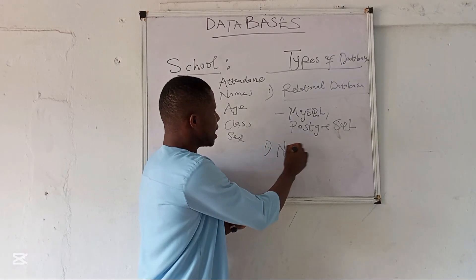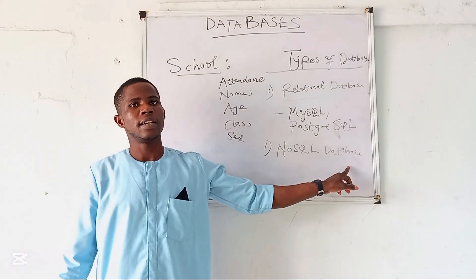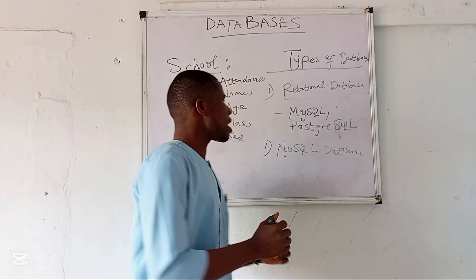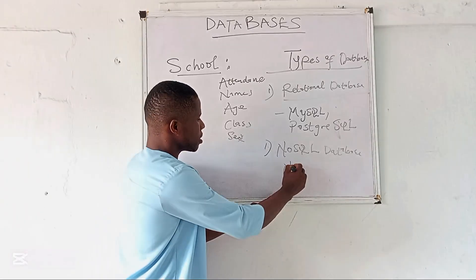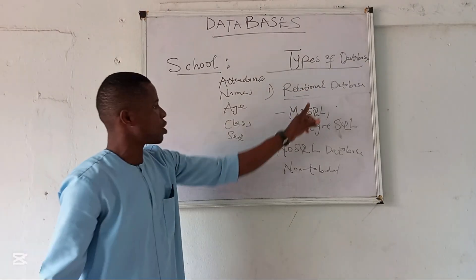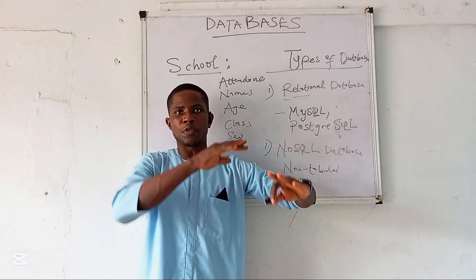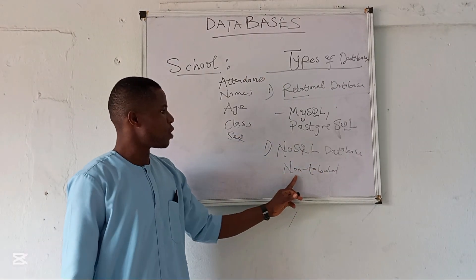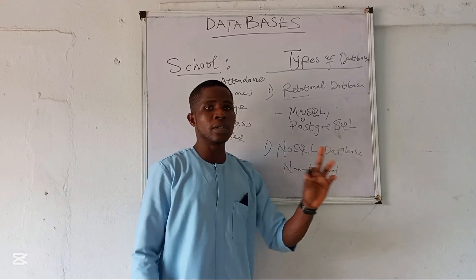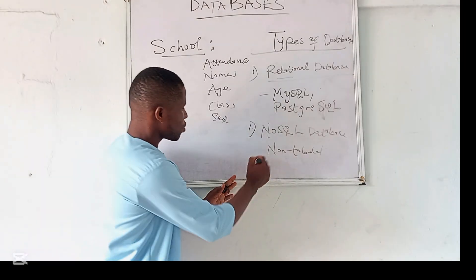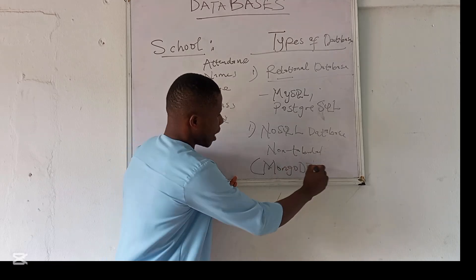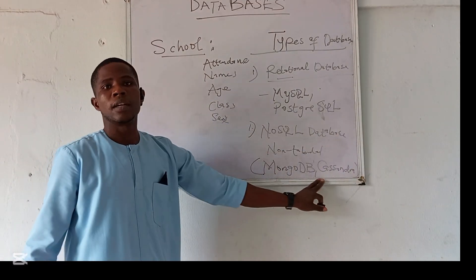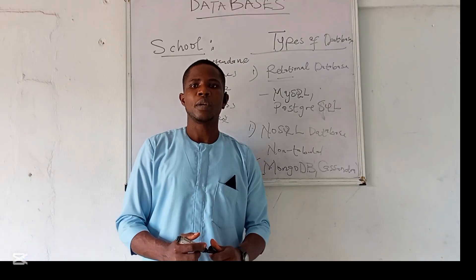Then you have NoSQL databases. In NoSQL databases, you use a flexible, non-tabular format for storing data. Remember, in relational databases you store data in tables of rows and columns, but in NoSQL databases you store data in a non-tabular format. Examples include MongoDB and Cassandra — these are NoSQL database technologies you should be familiar with.